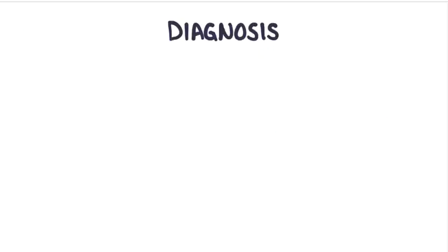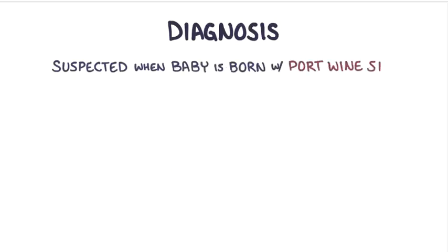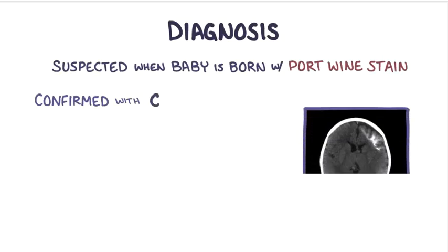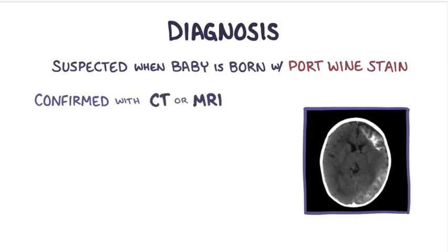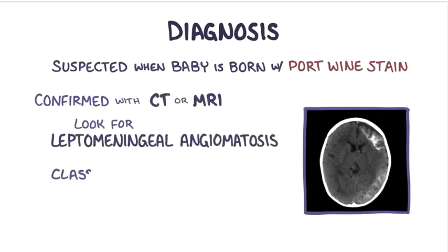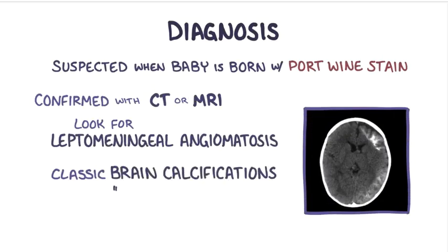Sturge-Weber syndrome is usually suspected when a baby is born with a port wine stain, and to confirm the diagnosis, brain imaging with a CT or MRI scan can be done to look for leptomeningeal angiomatosis, and the classical type of brain calcifications called tram-track pattern, because it literally looks like tramway tracks.